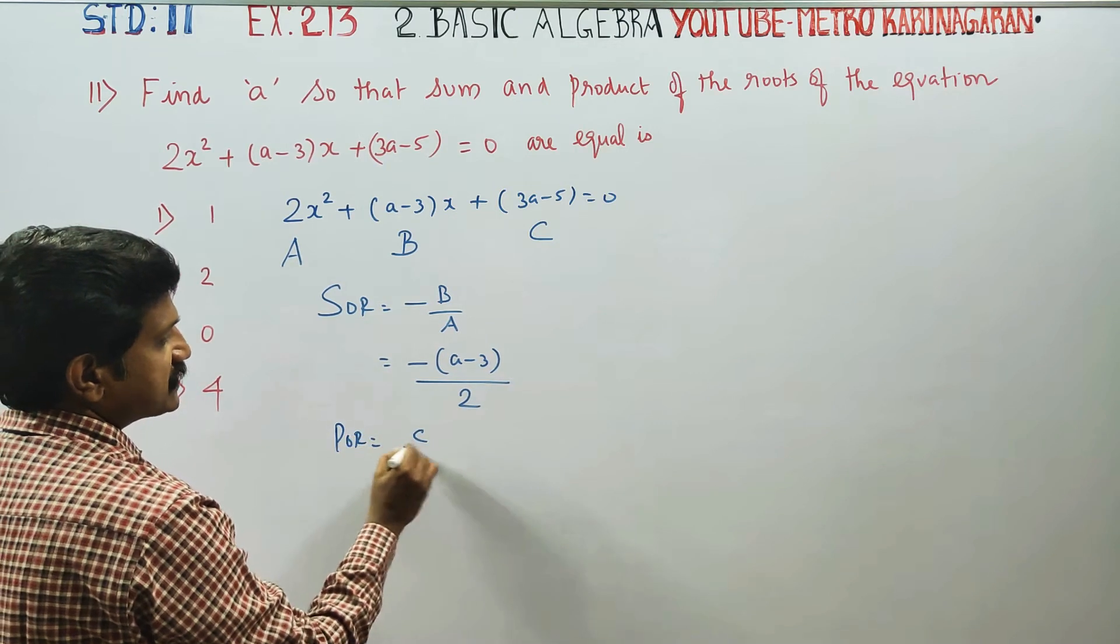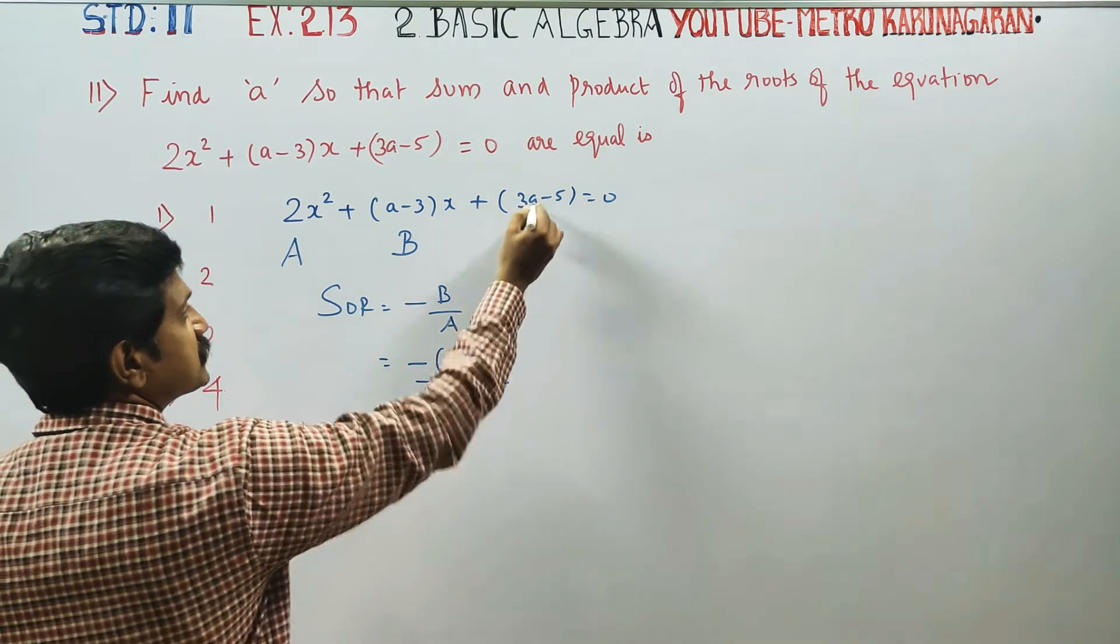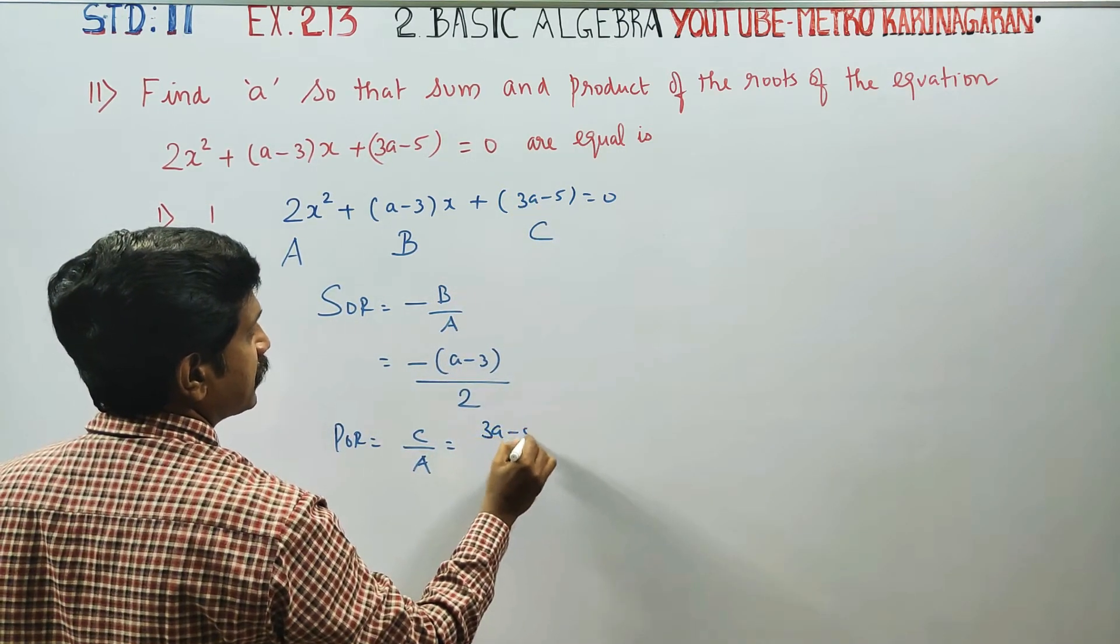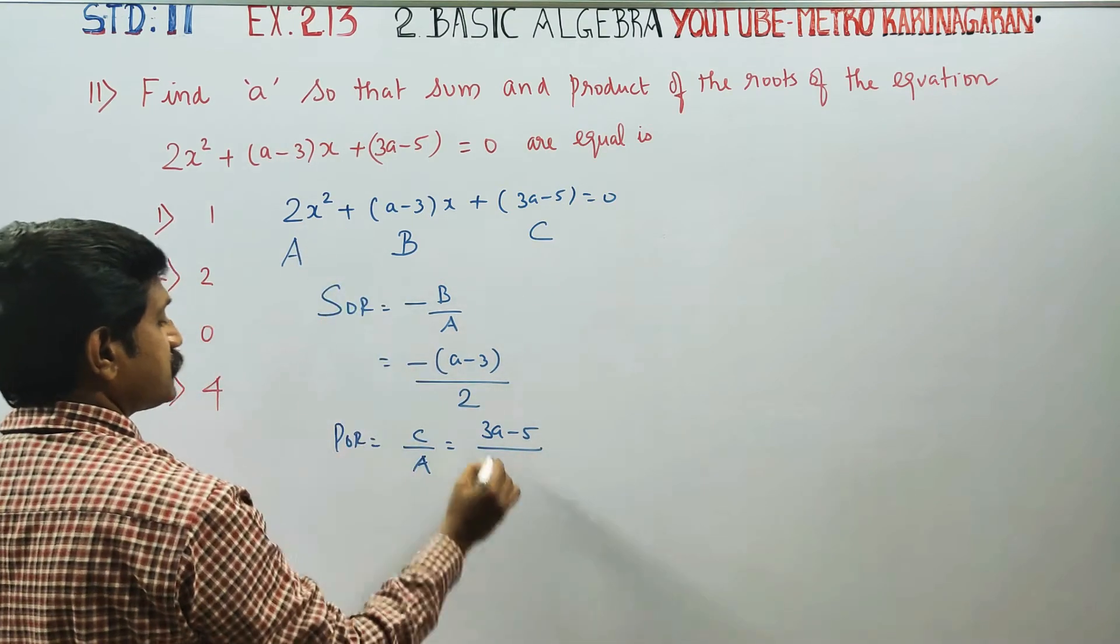Product of the roots is C/A. What is C? (3A-5)/A, where A is 2.